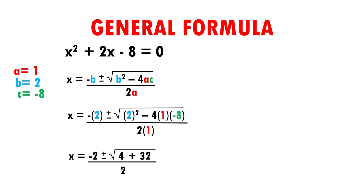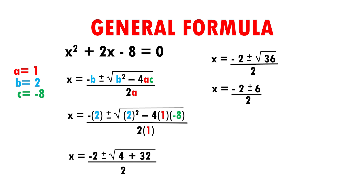So now it looks like x equals minus 2 plus or minus the square root of 4 plus 32, over 2. Then x equals minus 2 plus or minus the square root of 36, over 2. The square root of 36 is 6. Since we have the plus-or-minus sign, I will perform this with both signs to get two results: x1 equals minus 2 plus 6 over 2, and x2 equals minus 2 minus 6 over 2.